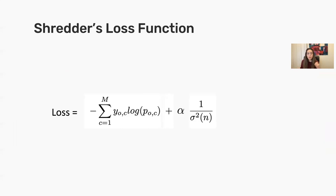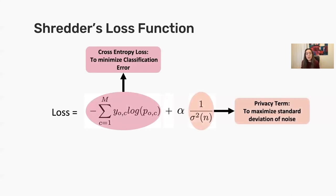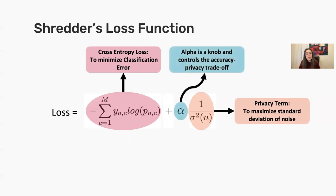The loss function is relatively simple with two main terms. The first is a cross-entropy loss, which minimizes the classification error — ensuring the model still runs its main task with an acceptable level of accuracy. At the same time, we want to increase the noise to lose information and get privacy by discarding information not related to the task. So we also have a term that maximizes the standard deviation of the noise. We also have a knob alpha to help control the accuracy-privacy tradeoff.